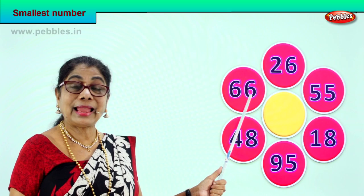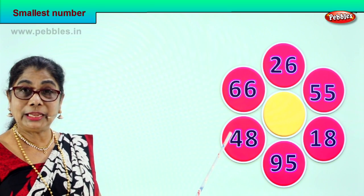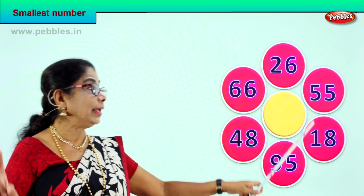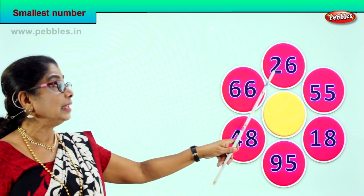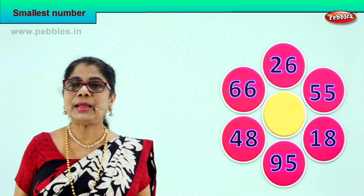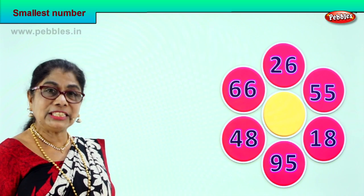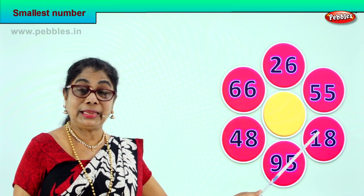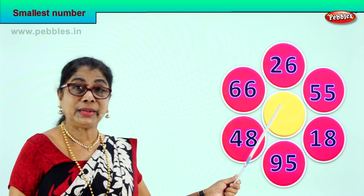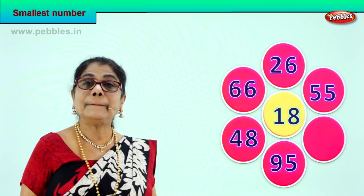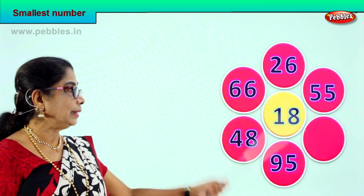Let's go to the next exercise. 66 has 6 tens, 48 has 4 tens, 95 has 9 tens, 18 has 1 ten, 55 has 5 tens, 26 has 2 tens. Look at the tens place — which number has the least number of tens? Certainly 18 has only 1 ten, so 1 ten and 8 ones — 18 is the smallest number. Among these we take 18 and put it in the middle, because that's the smallest number. Good, did you enjoy?